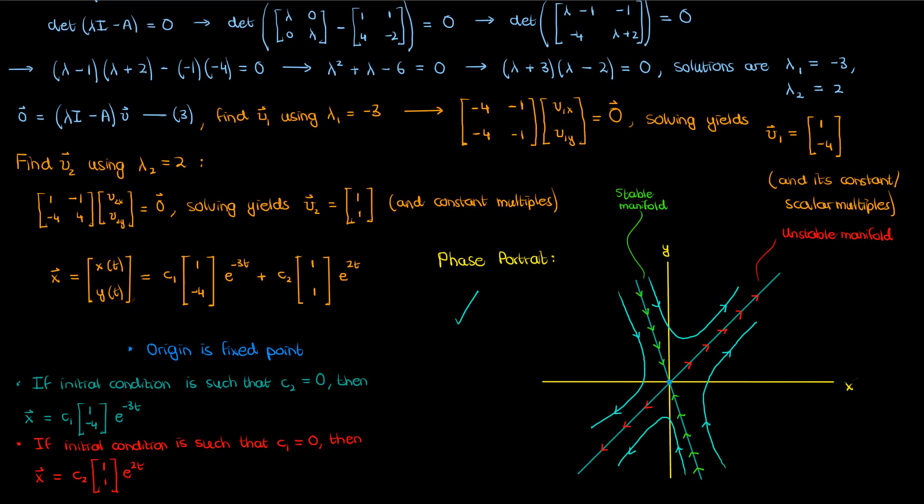That should do it for this video. I've shown a quick way to deconstruct a two-dimensional linear dynamical system: using just the eigenvalues, eigenvectors, and fixed point you can sketch a complete phase portrait without fully solving the differential equations. In this video I covered real and unique eigenvalues and eigenvectors. In the next video I'll talk about special cases — when the eigenvalues are repeated or even complex.